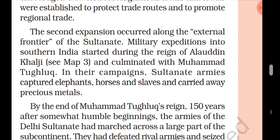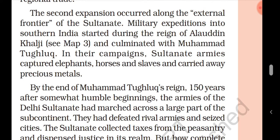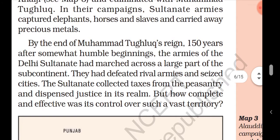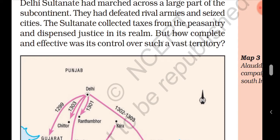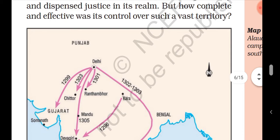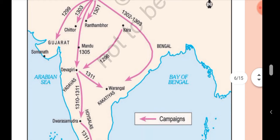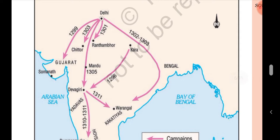In their campaigns, the Sultan's armies captured elephants, horses, and slaves, and carried away precious metals. By the end of Muhammad Tughlaq's reign — 150 years after the somewhat humble beginning — the armies of the Delhi Sultanate had marched across a large part of the subcontinent, defeated rival armies, seized cities, collected taxes from the peasantry, and dispensed justice in their realm.